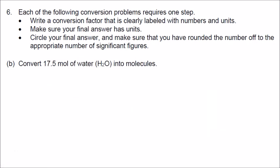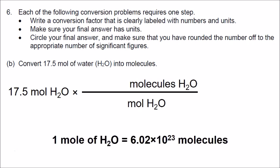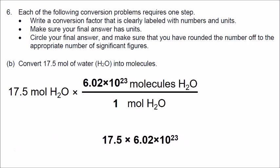In part B, we are starting with 17.5 moles of water and converting into units of molecules. We draw our line for the conversion factor. We put units of moles on the bottom so they cancel out, and molecules on the top. This is not going to involve the periodic table — this will involve Avogadro's number. Every mole of water contains 6.02 times 10 to the 23rd molecules. We put a 1 on the bottom next to moles and Avogadro's number on the top next to molecules.